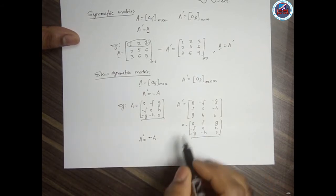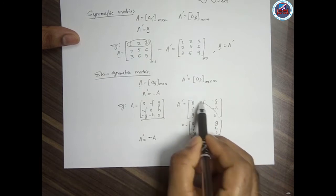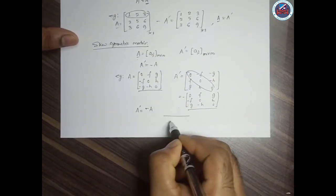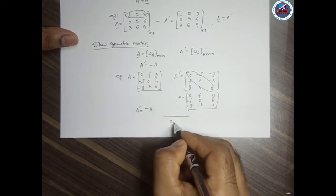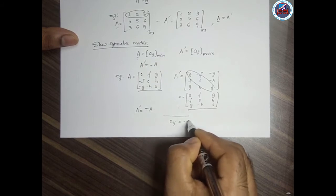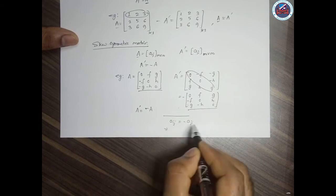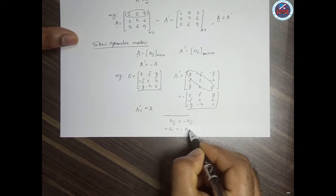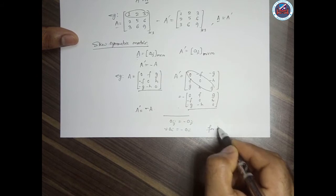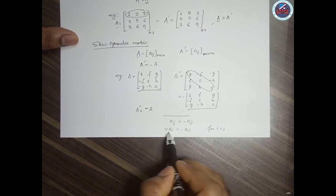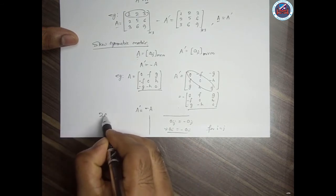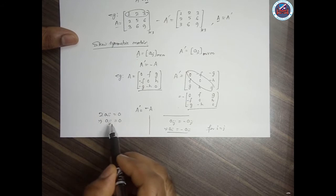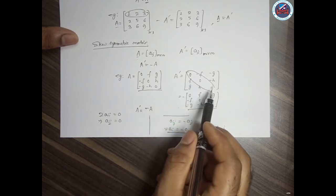One thing to notice is that for a skew symmetric matrix the diagonal elements are always zero. Here is a small proof: in a skew symmetric matrix A_ij equals minus A_ji. Setting i equal to j gives A_ii equals minus A_ii, so 2·A_ii equals 0, therefore A_ii equals 0. The diagonal elements are always zero for a skew symmetric matrix.